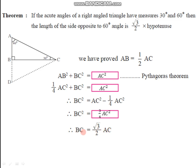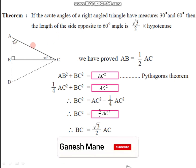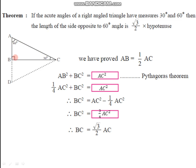Looking at the diagram, BC is the side opposite to 60 degrees and AC is the hypotenuse. So we have proved that the side opposite to 60 degrees is root 3 over 2 times the hypotenuse. In short, for a triangle whose angles measure 30 degrees, 60 degrees, and 90 degrees: the side opposite to 30 degrees is half the hypotenuse, and the side opposite to 60 degrees is root 3 over 2 times the hypotenuse.